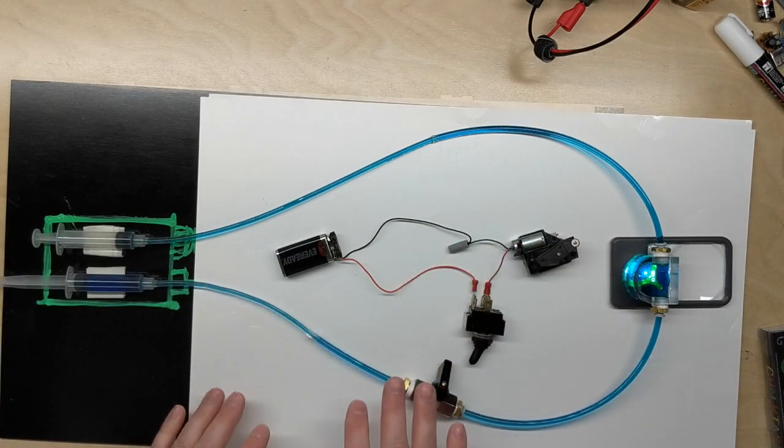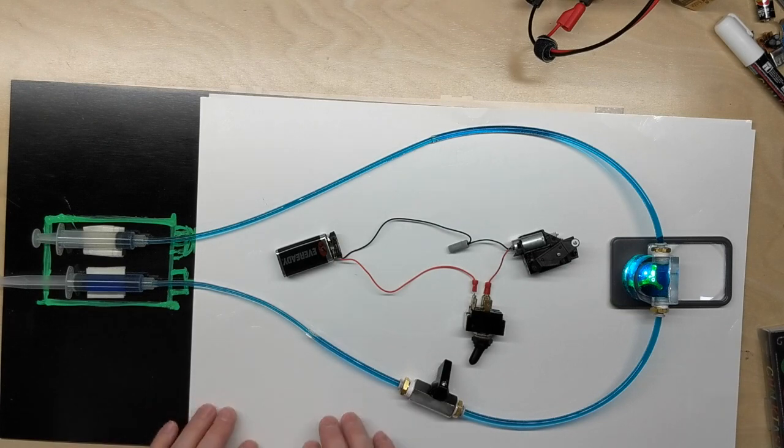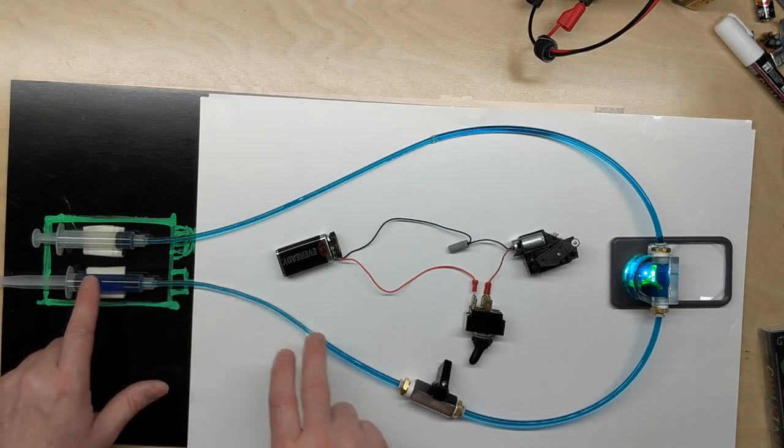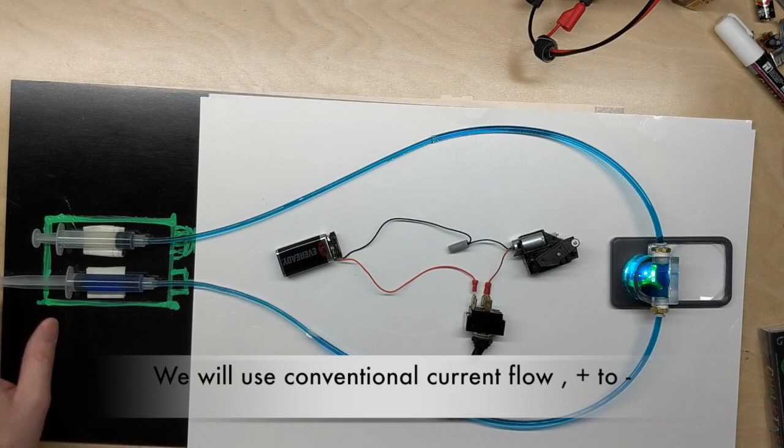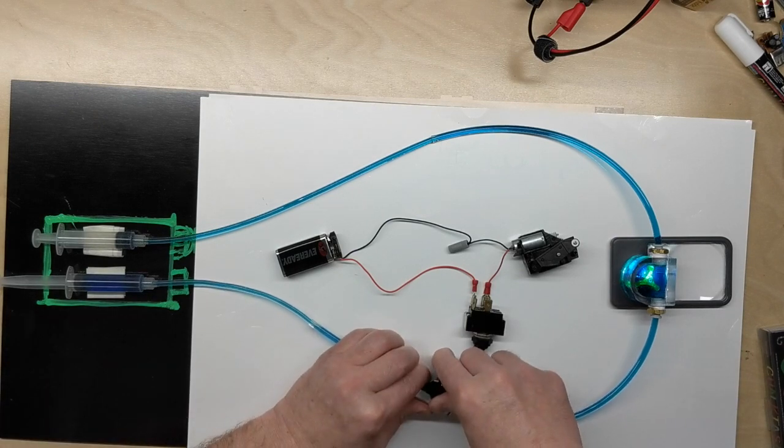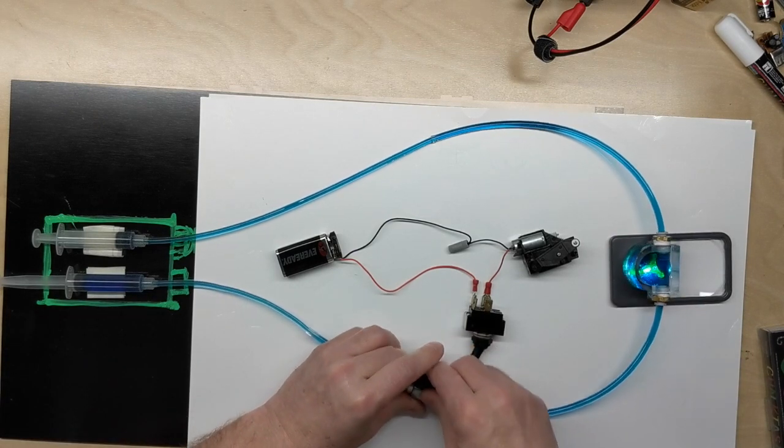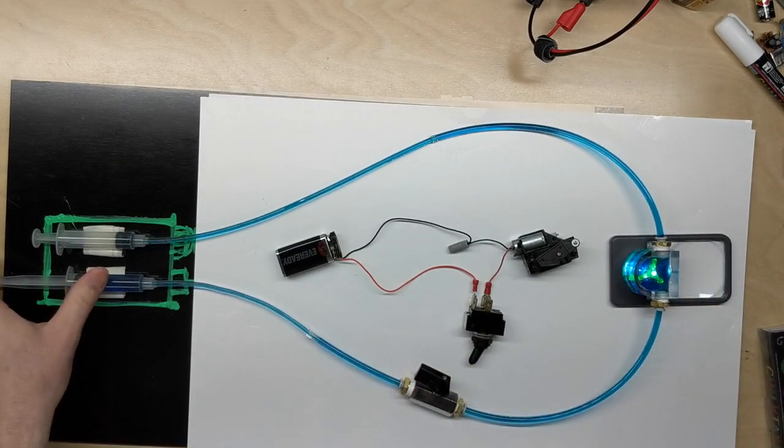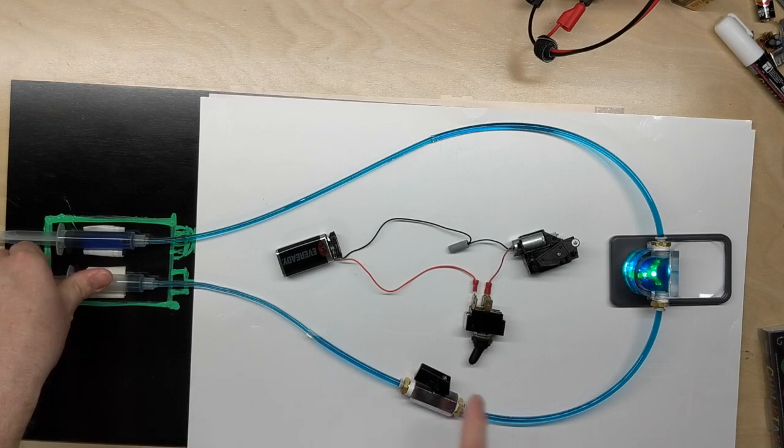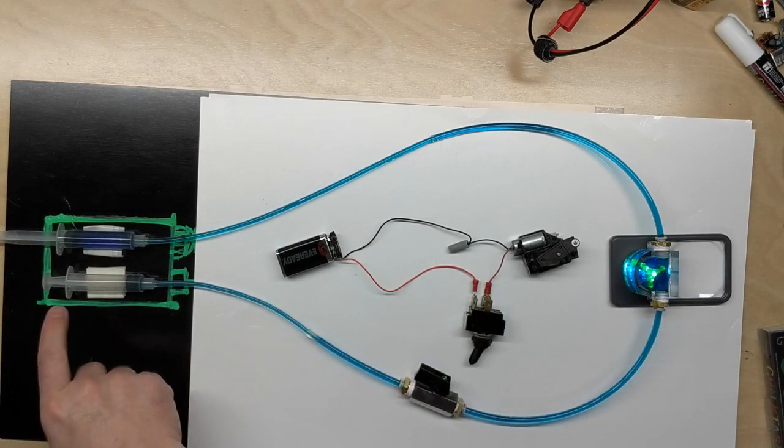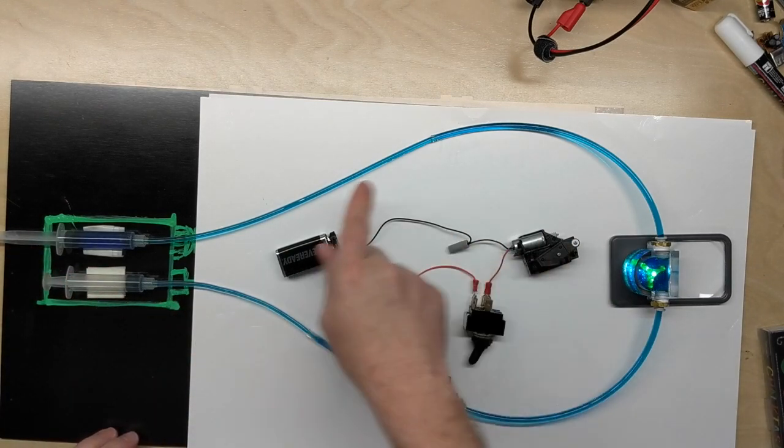But here we can see what is going on as we visualize electrons flowing. And we will get into flow in the next episode. At this point, we are going to look at flow going from positive to negative, and we will talk more about that later. But if I cut this valve or switch on and I have pressure, we have flow, and we notice that electrons flow from one terminal to the other.